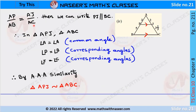Since the corresponding sides are equal, we can write PJ is parallel to BC. In triangles APJ and ABC, angle A is common and angle P equals angle B — corresponding angles. Angle J equals angle C — also corresponding angles. By Angle-Angle-Angle similarity, triangle APJ is similar to triangle ABC.